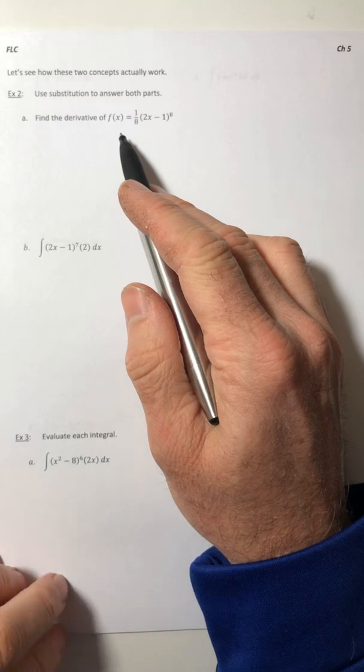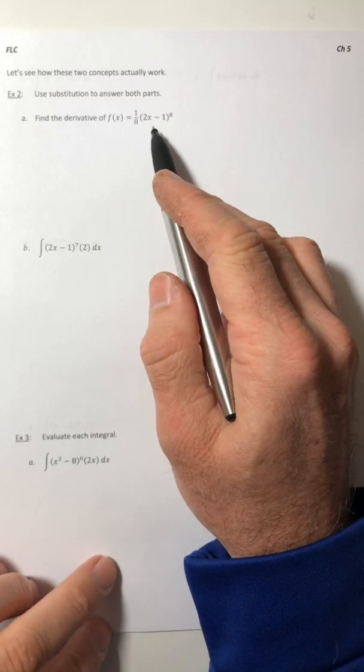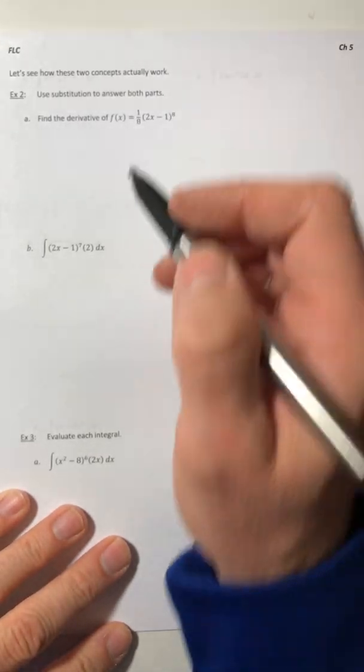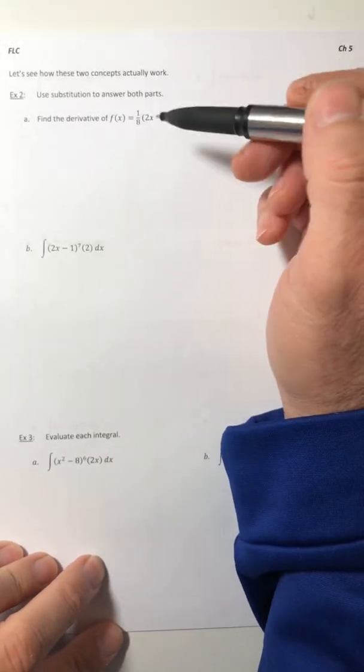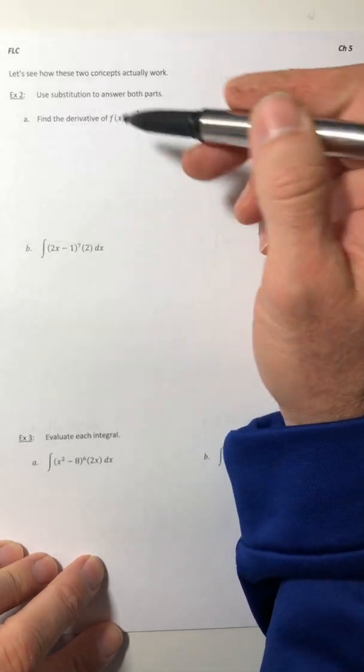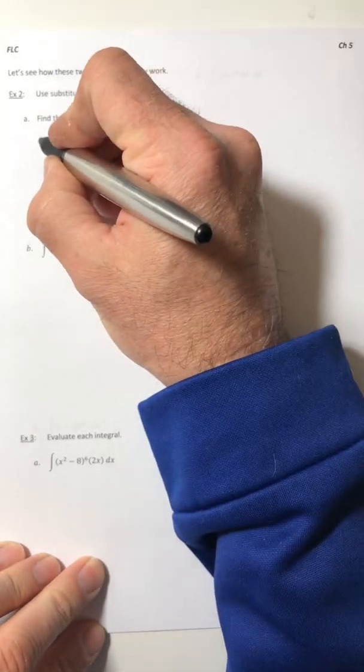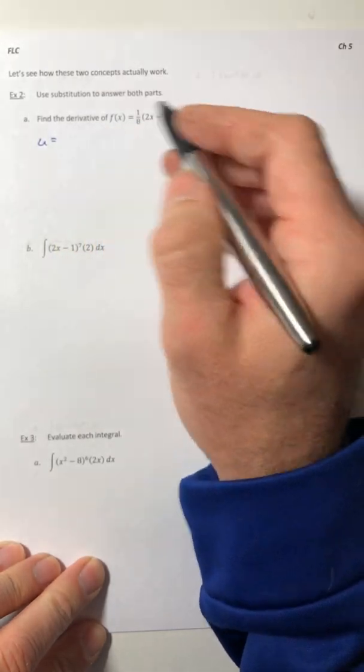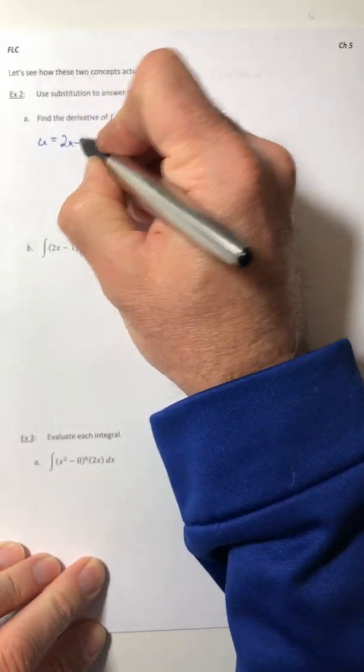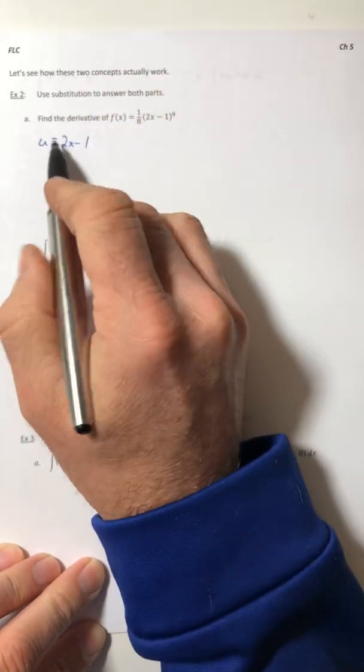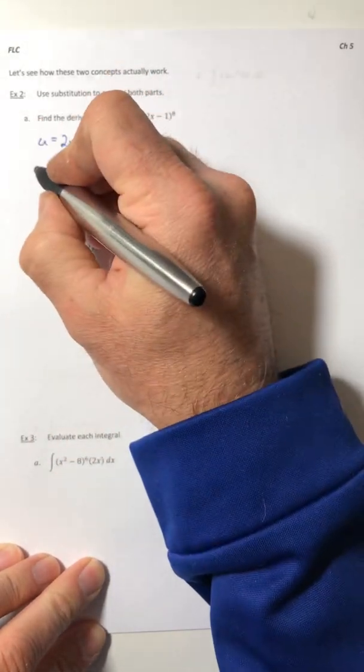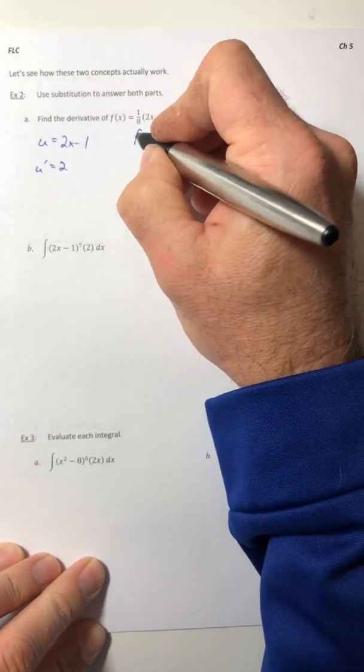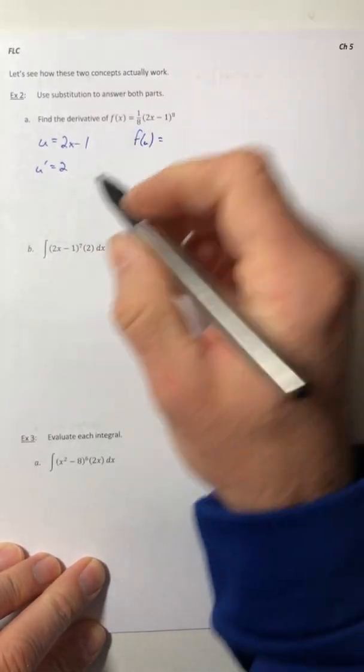We use substitution to answer both parts. Find the derivative of f of x equals 1 eighth times 2x minus 1 to the eighth. So when we did substitution, and I know you guys can do this without it, but just for the point, we had to choose something for the u, and typically it was the stuff that was inside. So like 2x minus 1. And then right after that, you found its derivative.